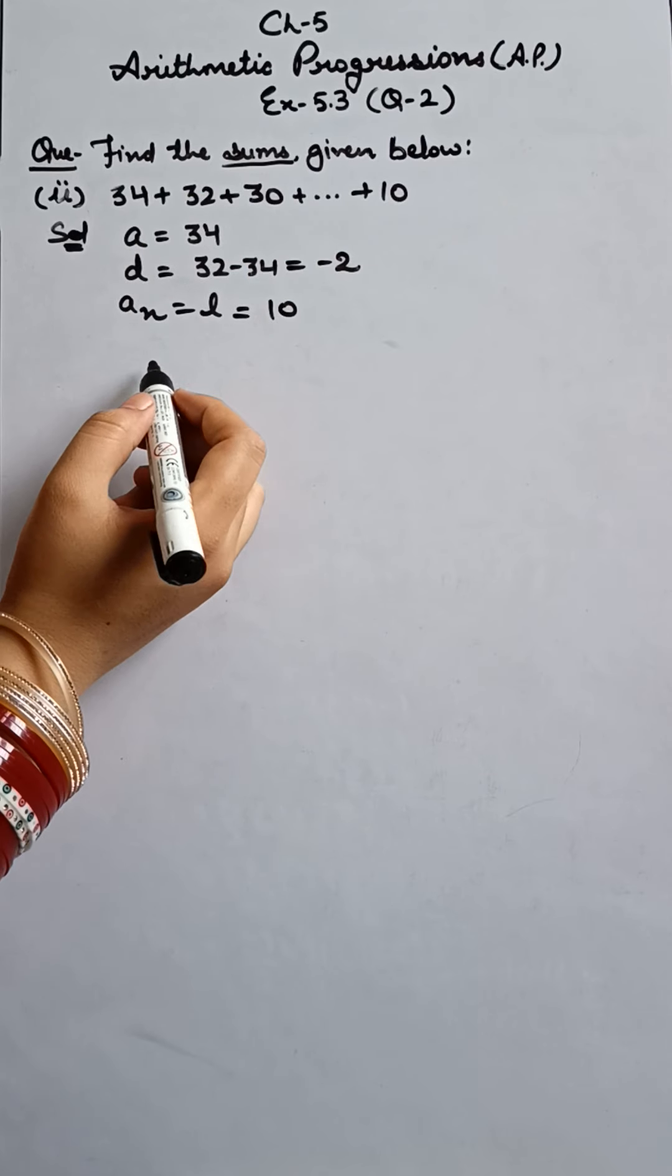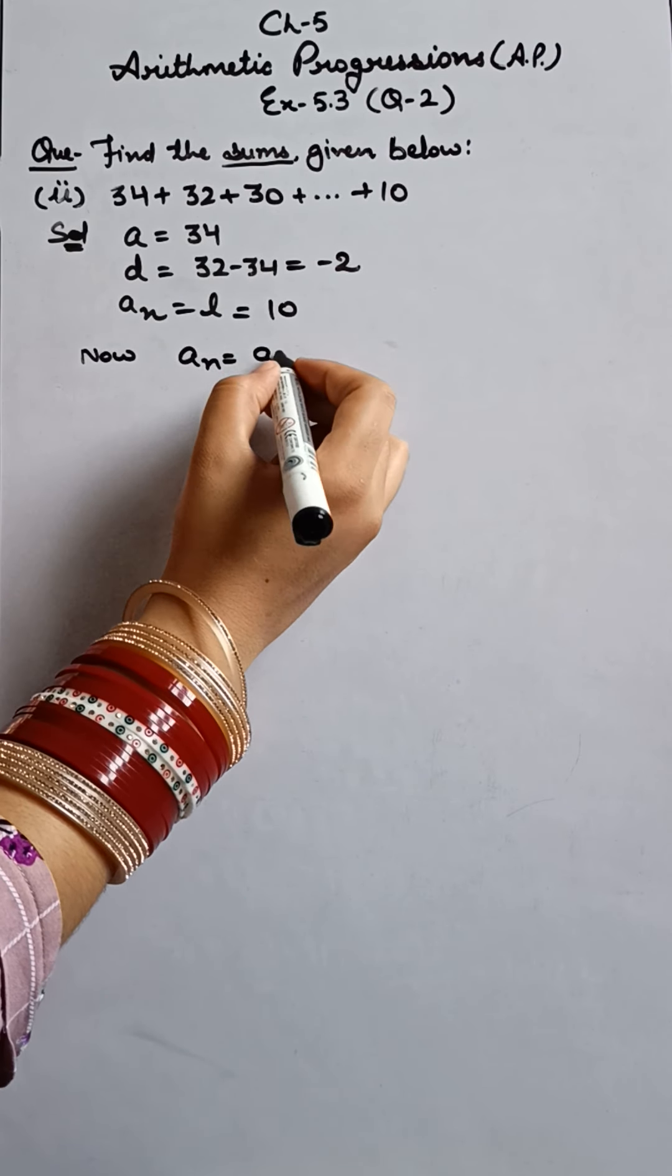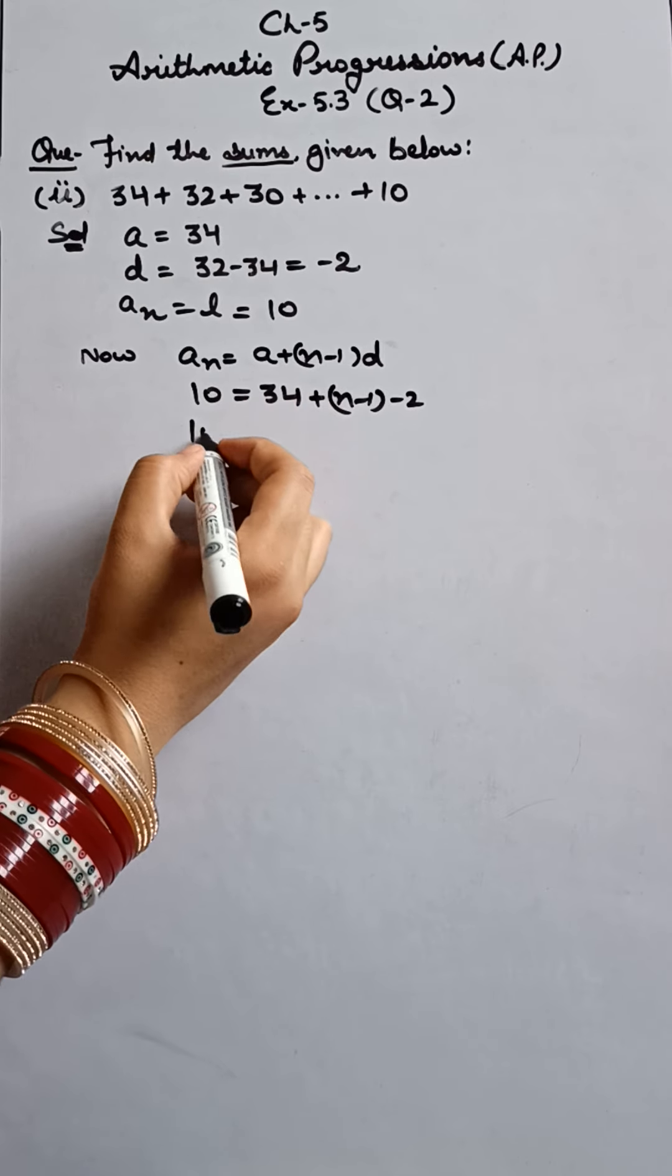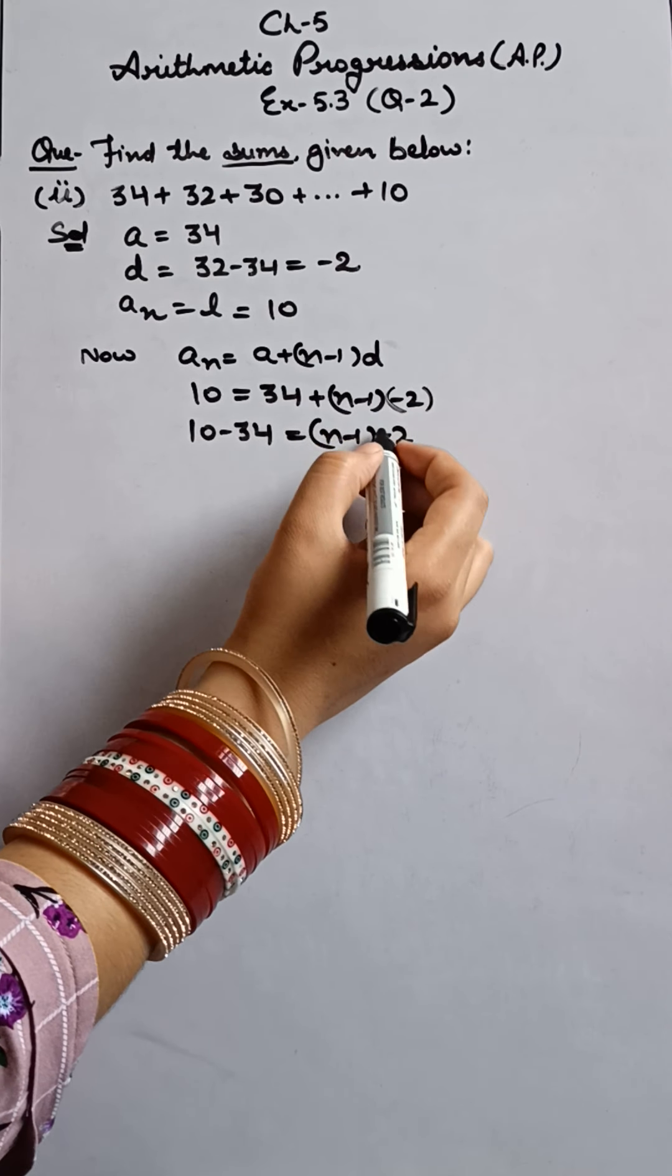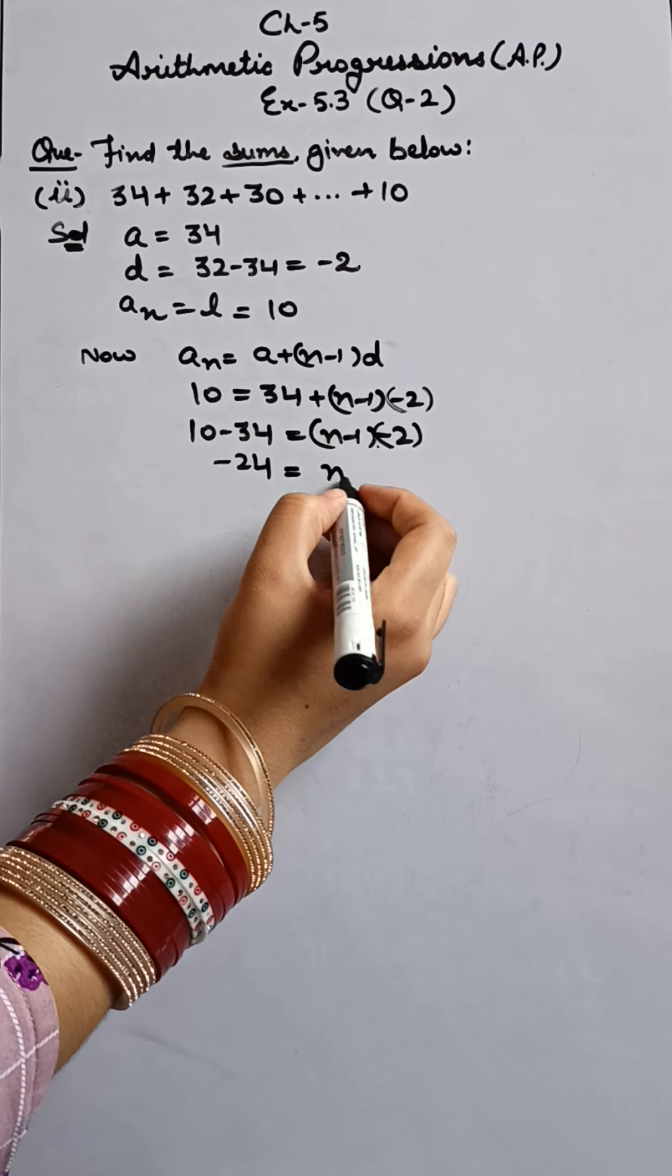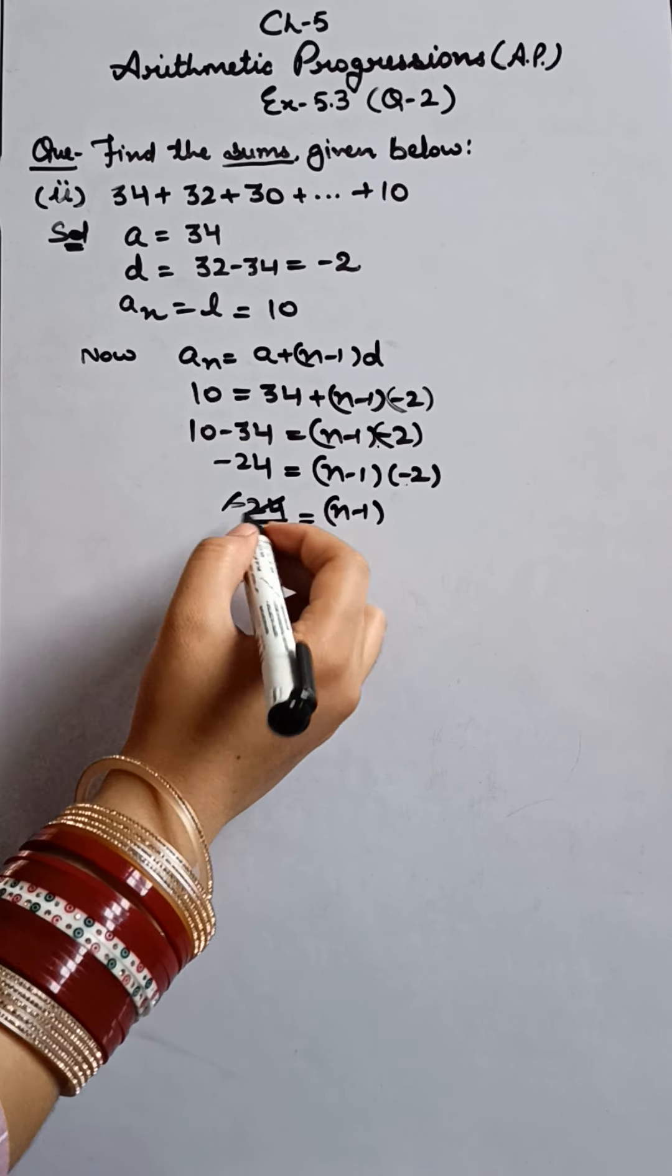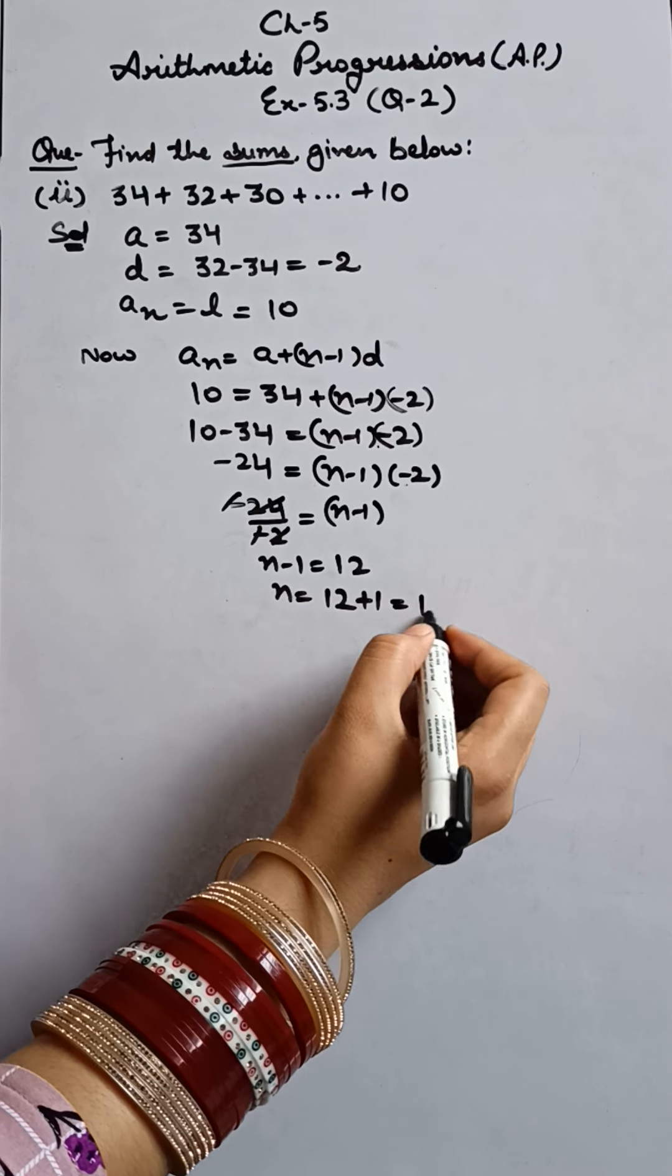So what values will we put? We have to find sum. But again, according to the sum formula, N is not available to us. So first what will we find out? Using the AN formula we will find out N. Put the values. 10 equals 34 plus, we don't know N, minus one, and D is minus 2. So firstly, this 34 to this side, minus 34. We get minus 24. Now this minus 2 is in multiplication. So coming to this side, it will become divide. Minus and minus cancel. 2 and 24 cancel. And what is left? 12. What is the value of N? This minus 1 to this side, plus 1. It's 13. So N is 13.